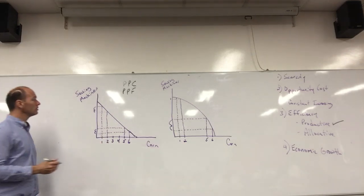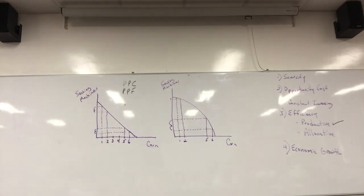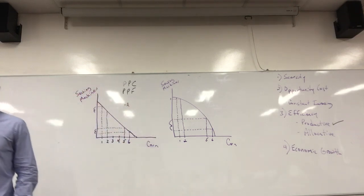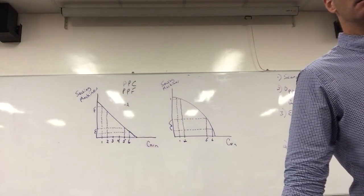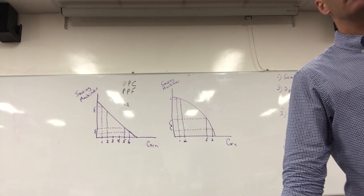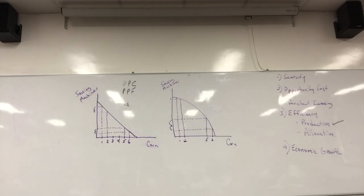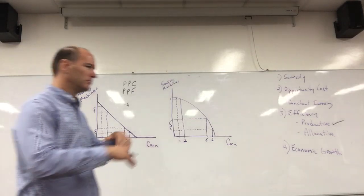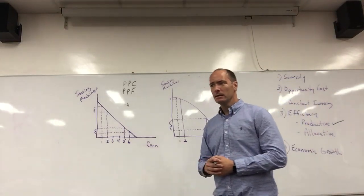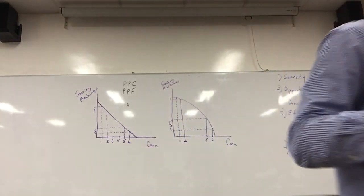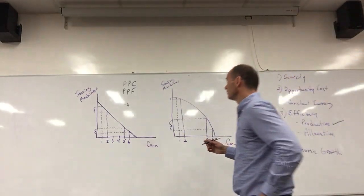Most any country would like to consume more than that — let's call this point A. But they can't. This economy can't produce goods at point A. Why? They don't have enough resources. They don't have enough people, workers, machines, capital, or they don't have enough land — either land to grow food on or land resources like oil and trees. And so they can only produce so much because they only have so many resources with which to produce the things they want — in this case, sewing machines and corn.